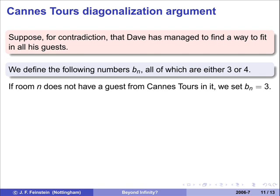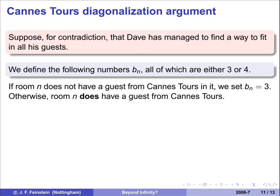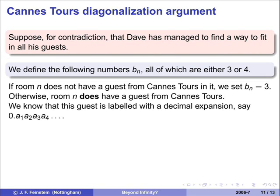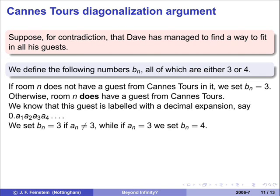If room n doesn't have a guest from Cantor's in it, we'll set bn to be 3. Otherwise, it does have one of the guests from Cantor's, and now I have to decide whether bn is going to be 3 or 4. I'll base it on who that guest is. The guest in that room has a decimal expansion 0.a1a2a3 and so on. I make sure that bn is either 3 or 4 and that it isn't equal to an — specifically, it's 3 if an isn't 3, and 4 if an is 3. So the main point is that whatever it is, it's not the same as the nth decimal place belonging to the Cantor's guest in room n, if there's a Cantor's guest there.